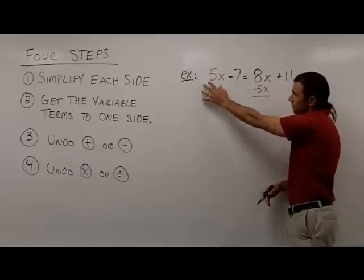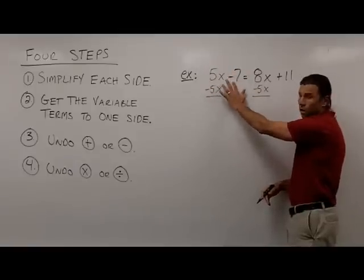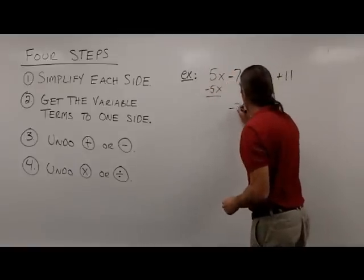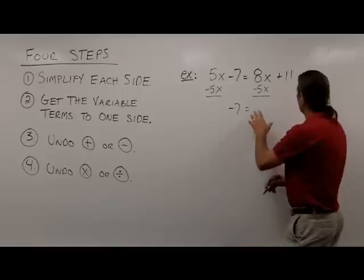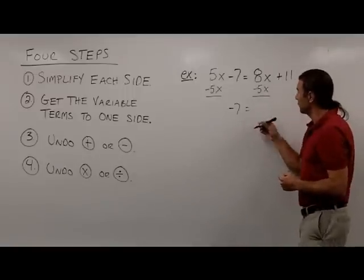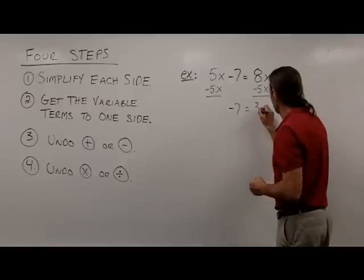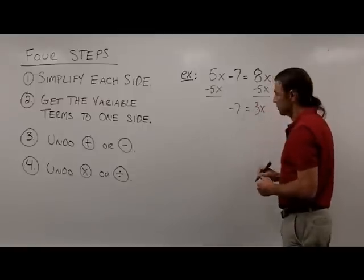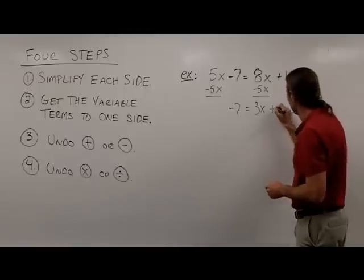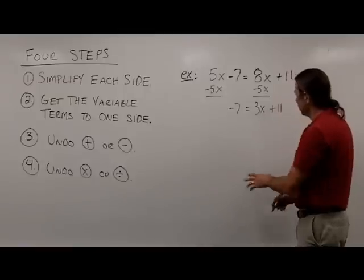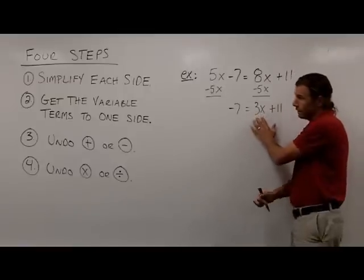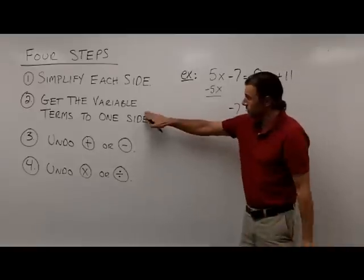Over here on the left side, that gives me 0, so all I'll have left is this negative 7. On the right side, I'm going to have 8x minus 5x, which is 3x, and I'll also bring down that plus 11. Notice now I have all the variable terms over on the right side. I'm done with step 2.